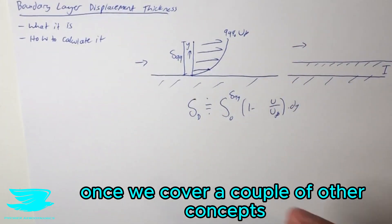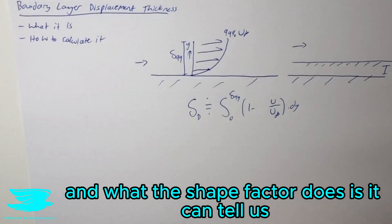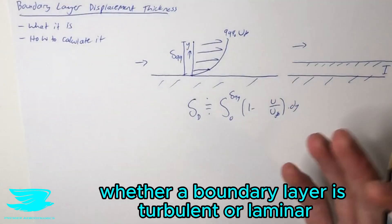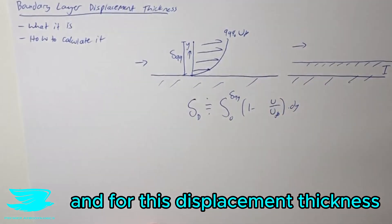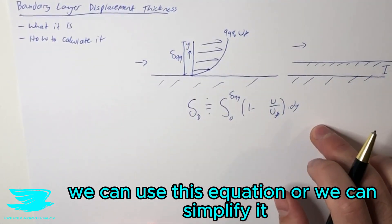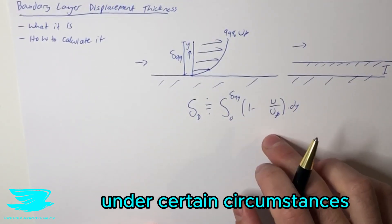which we'll get into in the next couple weeks once we've covered a couple other concepts. And what the shape factor does is it can tell us whether a boundary layer is turbulent or laminar. And for this displacement thickness, we can use this equation or we can simplify it under certain circumstances.